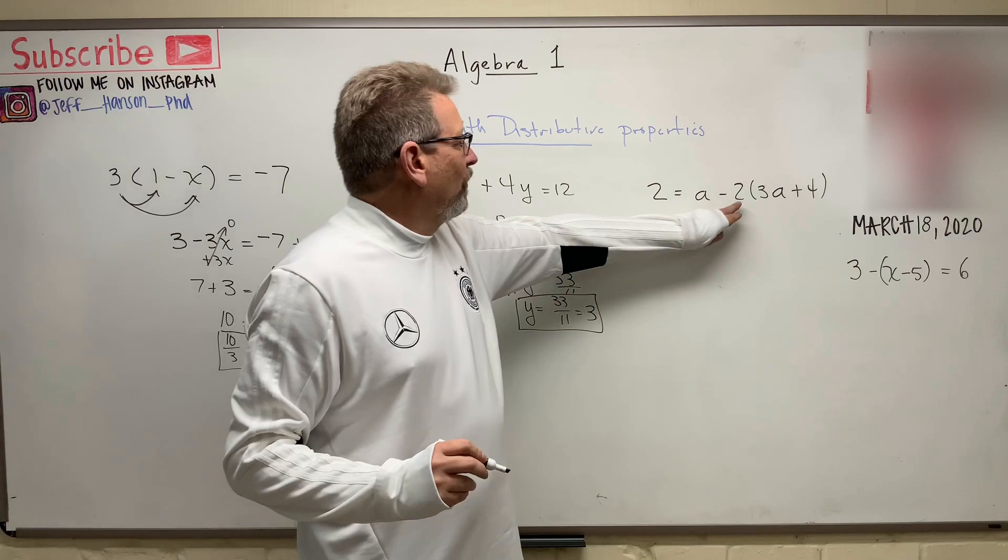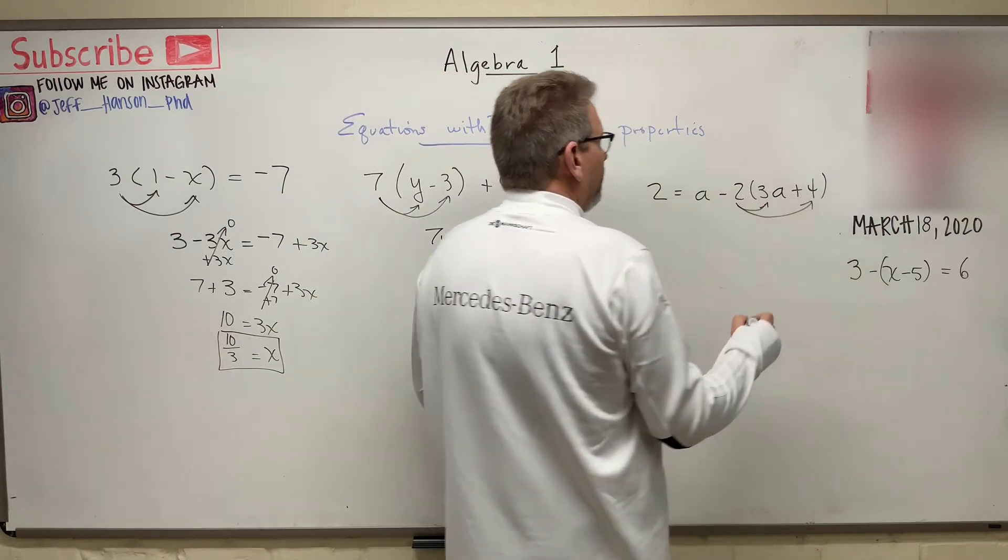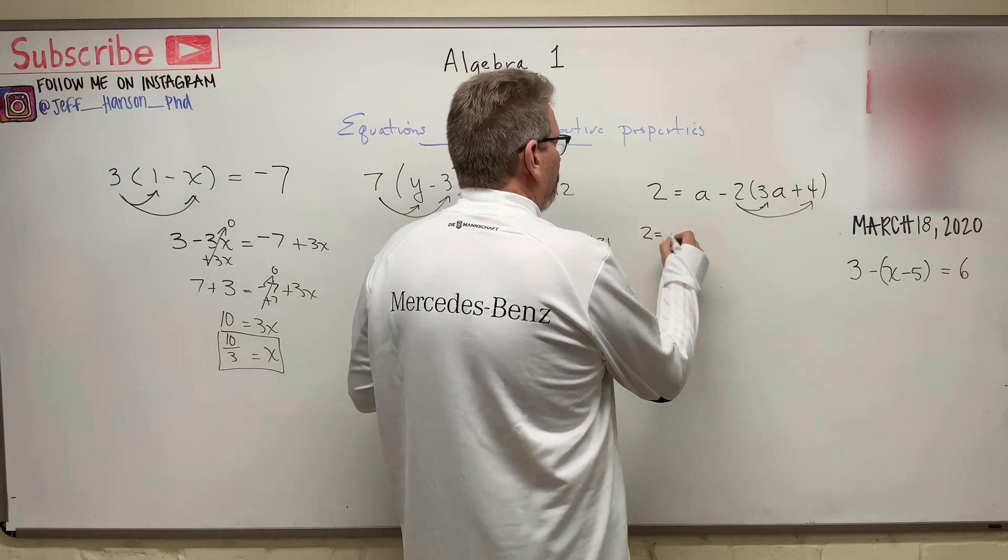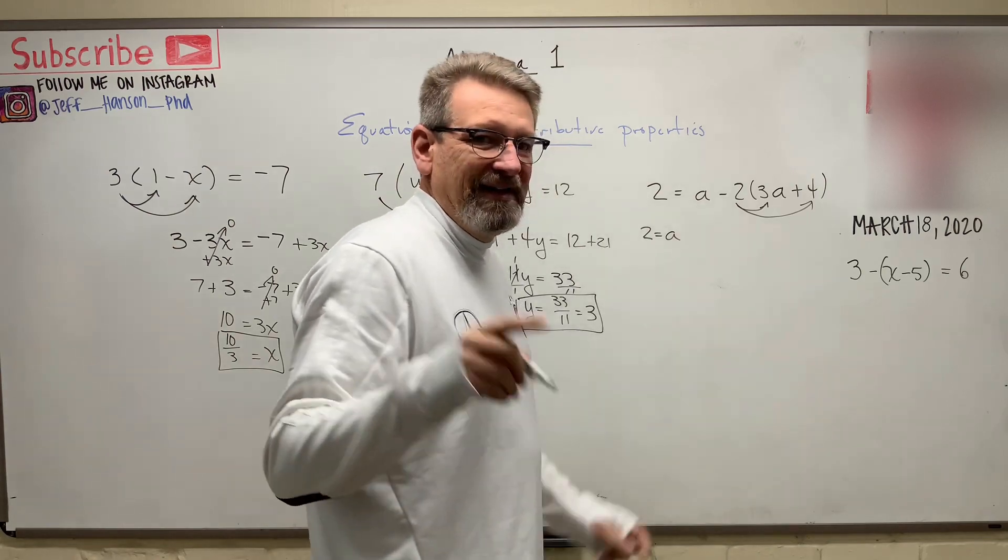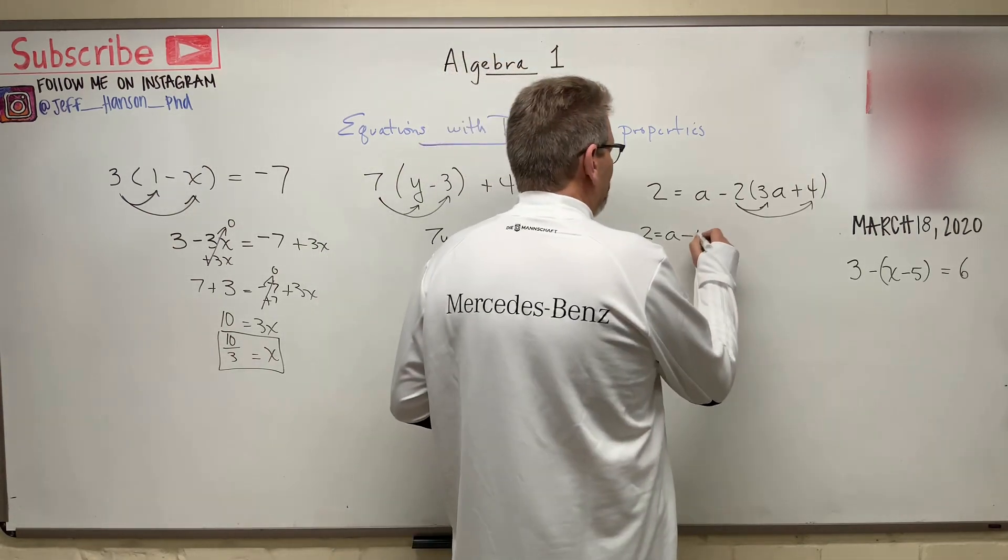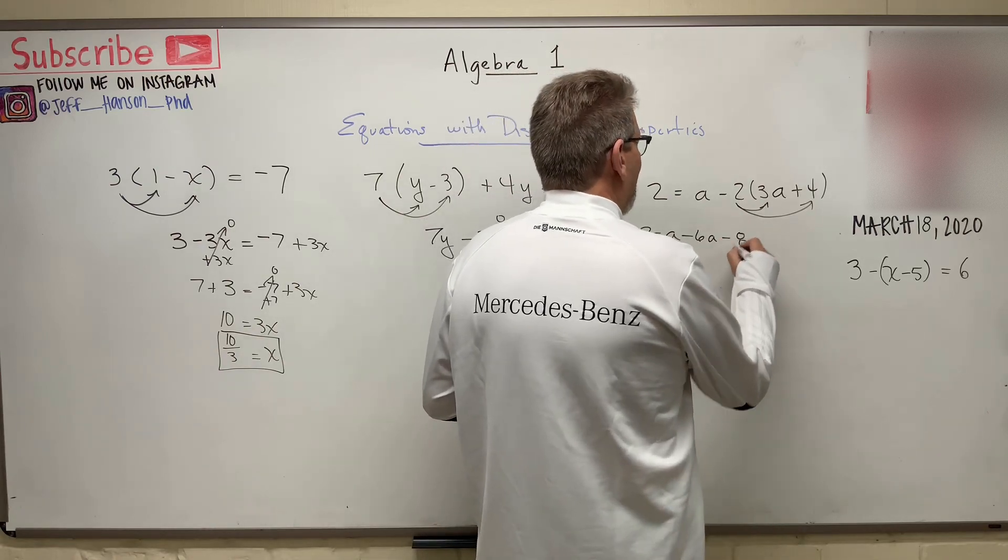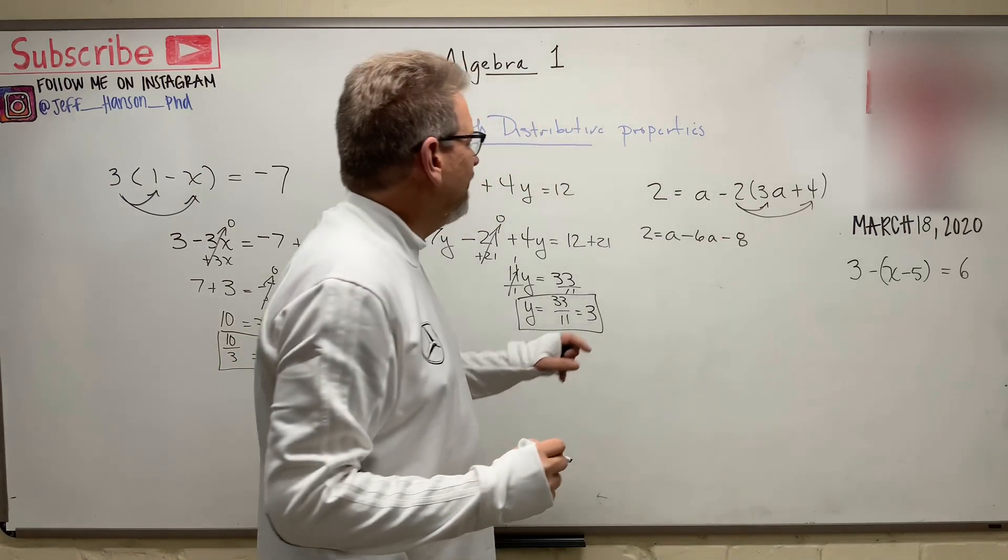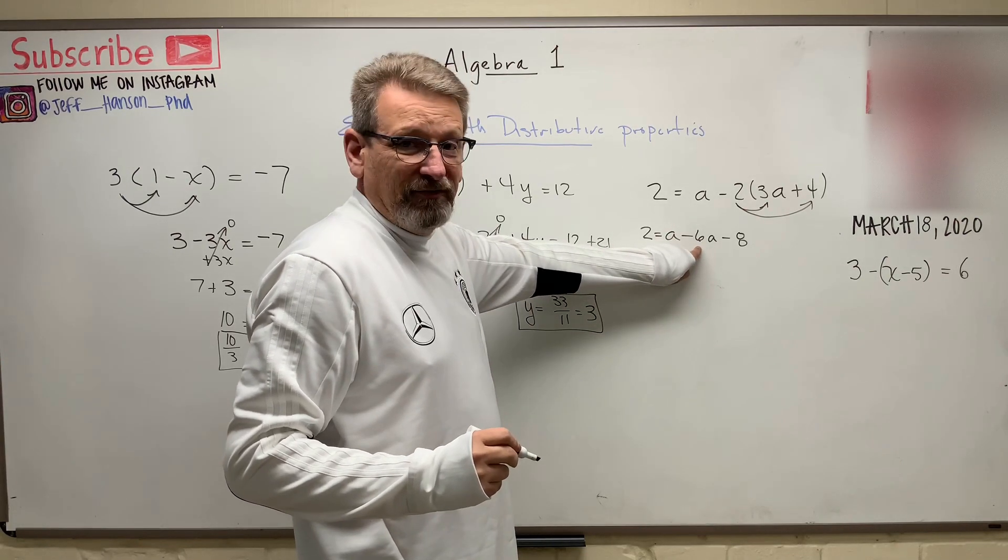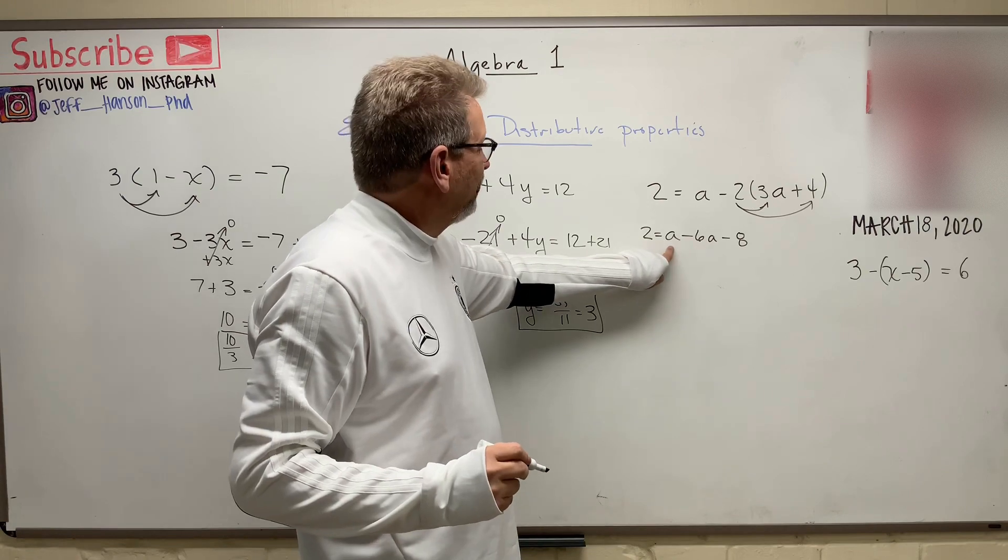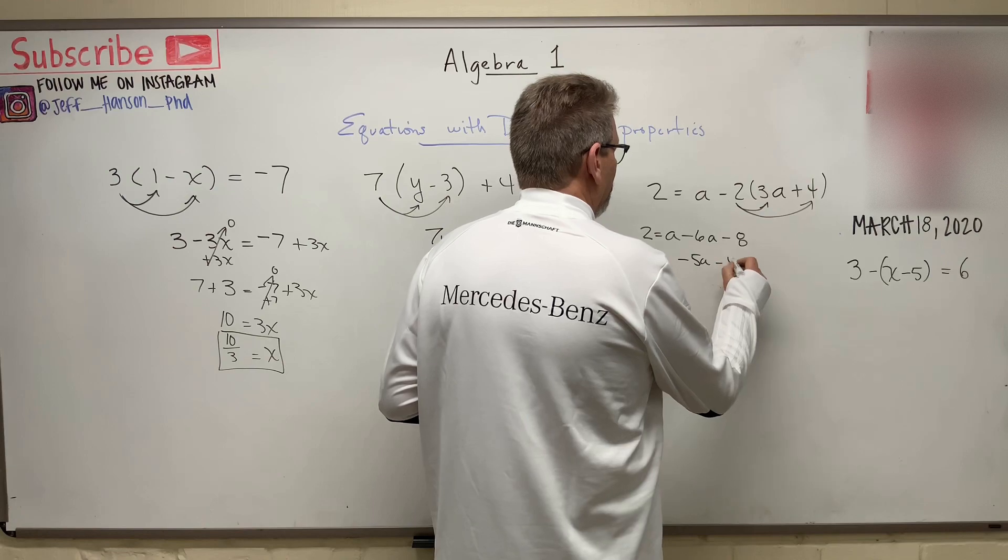Do we have a distributive property? Oh, we do, don't we? Look here. One there, one there. So I have 2 is equal to a. Negative 2 times 3 is negative 6, and then negative 2 times 4 is negative 8. And then how much is a minus 6 more a's? That's a positive a minus 6 a's. That's going to leave you with minus 5a.